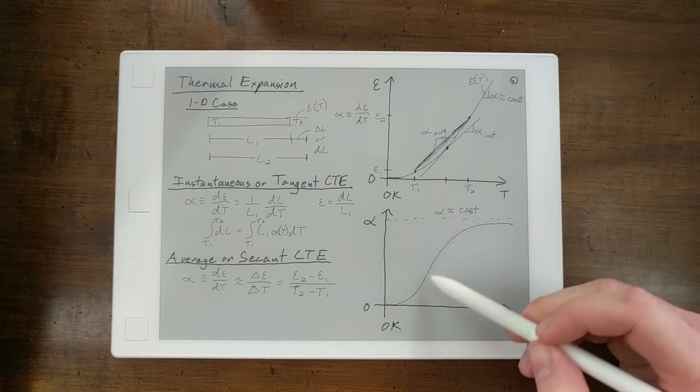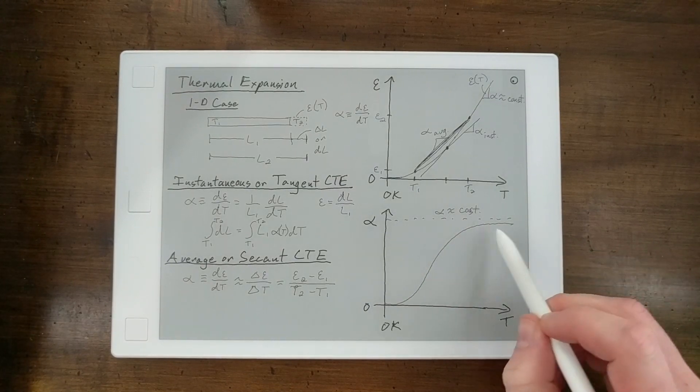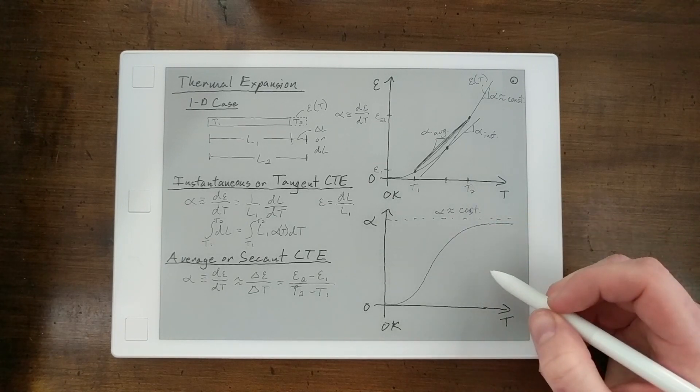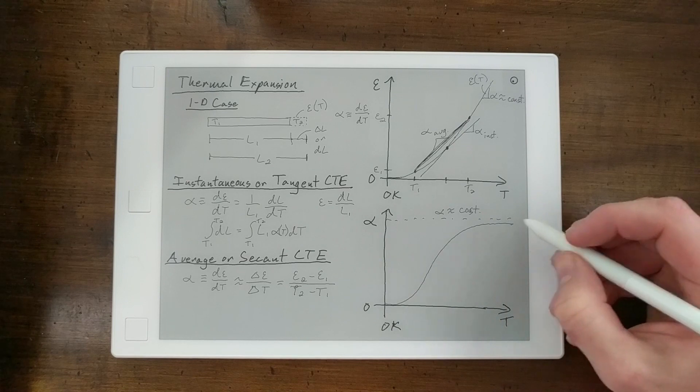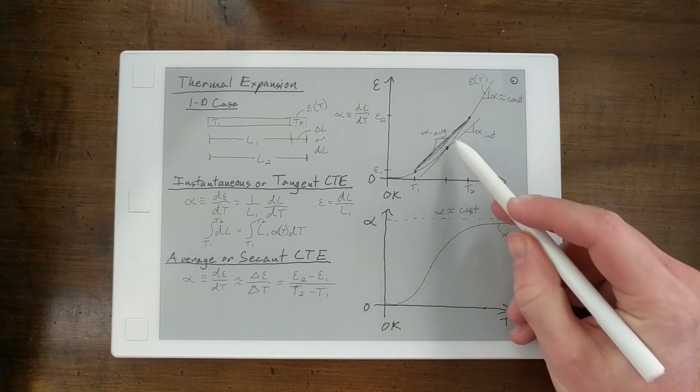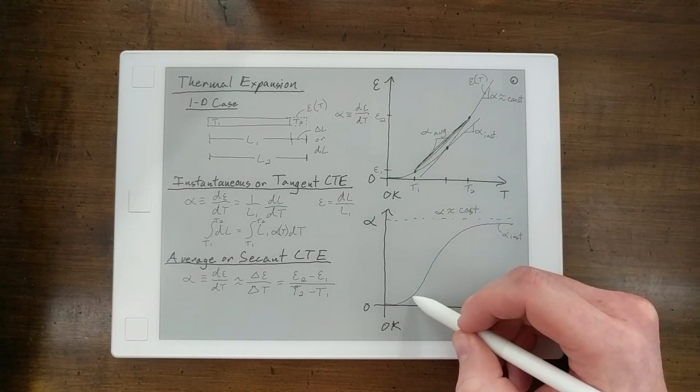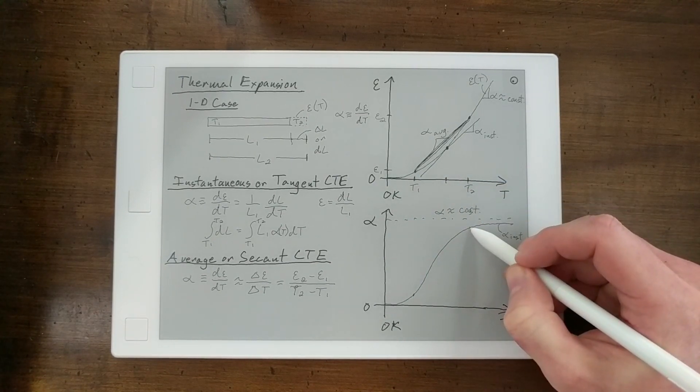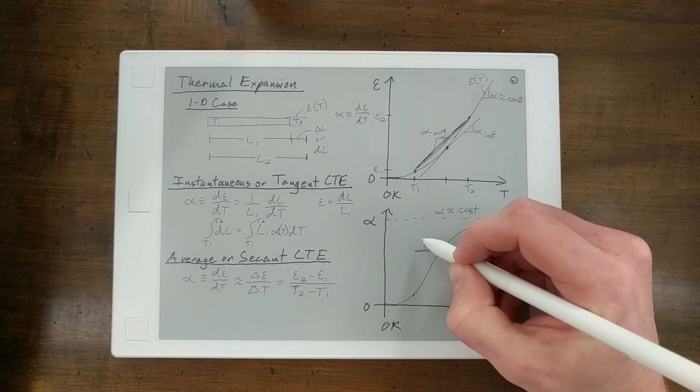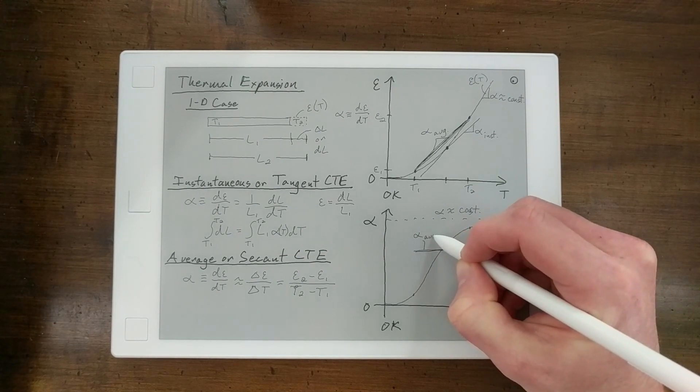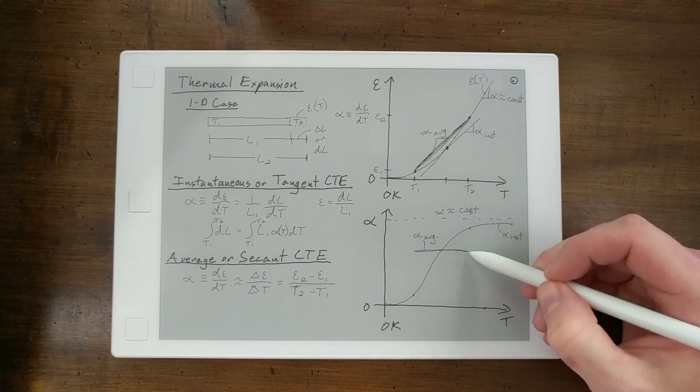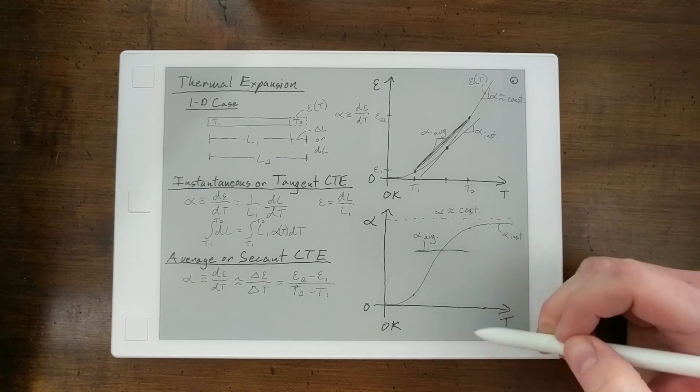And so, in this range, you have a very large change in CTE with temperature. In this range, you don't have a very large change in CTE. So, you can see, this would be alpha instantaneous. So, if you were to use the average CTE between this T1 and this T2, your average CTE would be something like this, a constant value.